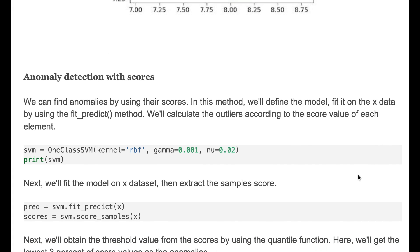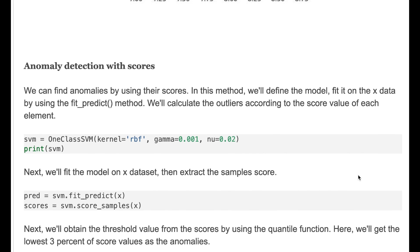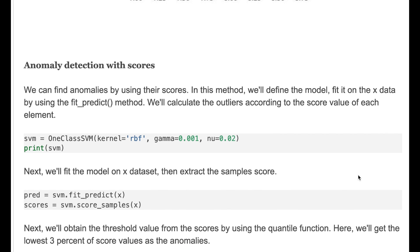The next method is anomaly detection with scores. In this method we'll define the model fitted on X data by using fit_predict method. Then we'll calculate the outliers according to the score value of each element.